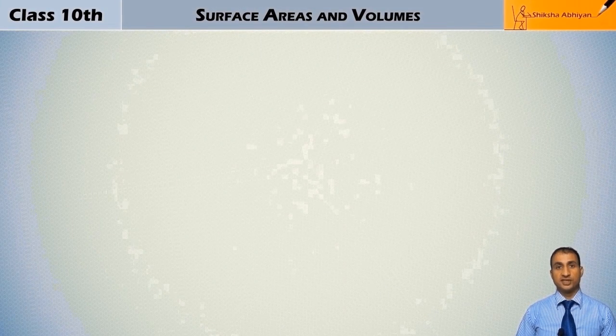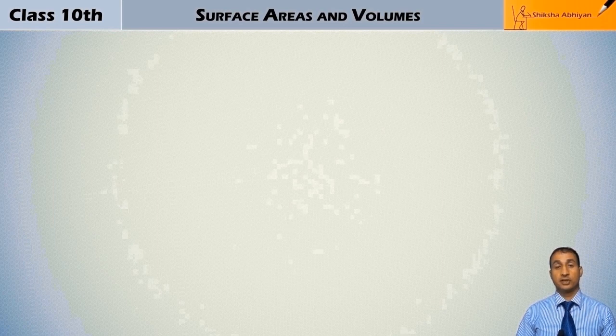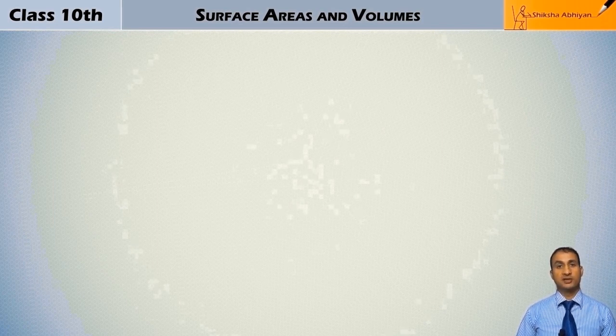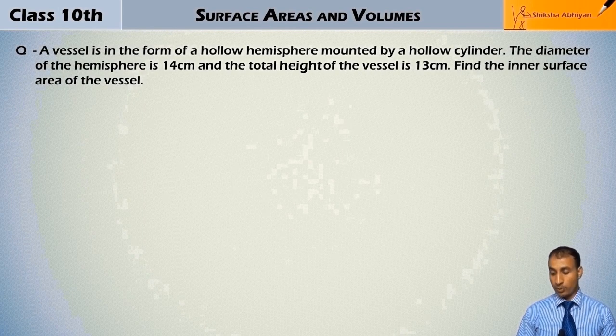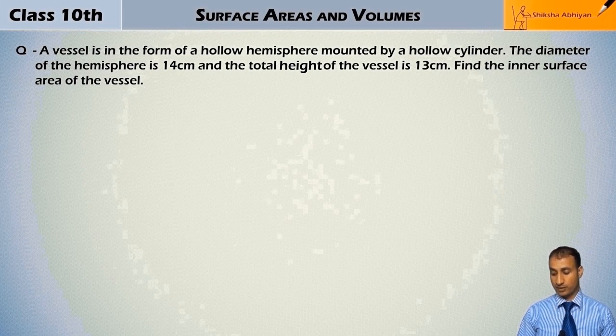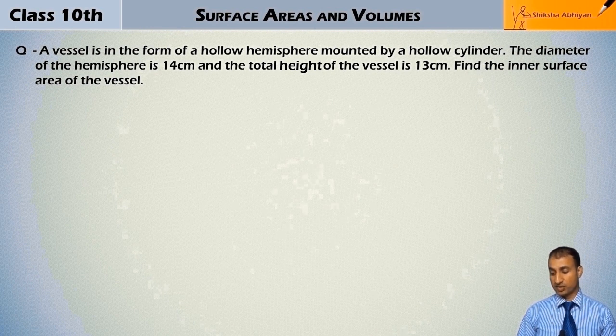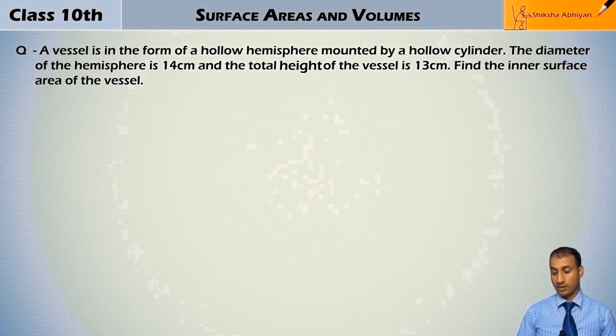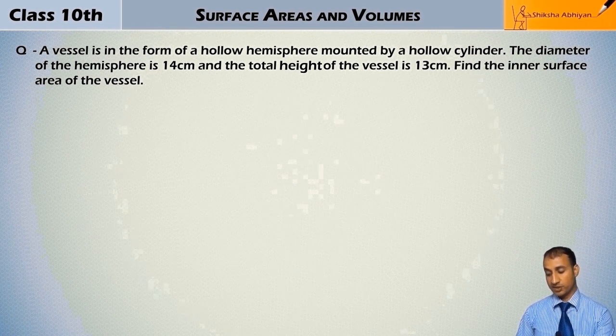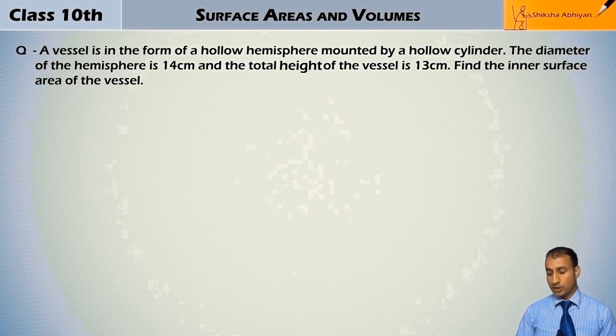In this exercise, we will solve some questions on surface areas of solids. Here's the first question: A vessel is in the form of a hollow hemisphere mounted by a hollow cylinder. The diameter of the hemisphere is 14 cm and the total height of the vessel is 13 cm. Find the inner surface area of the vessel.